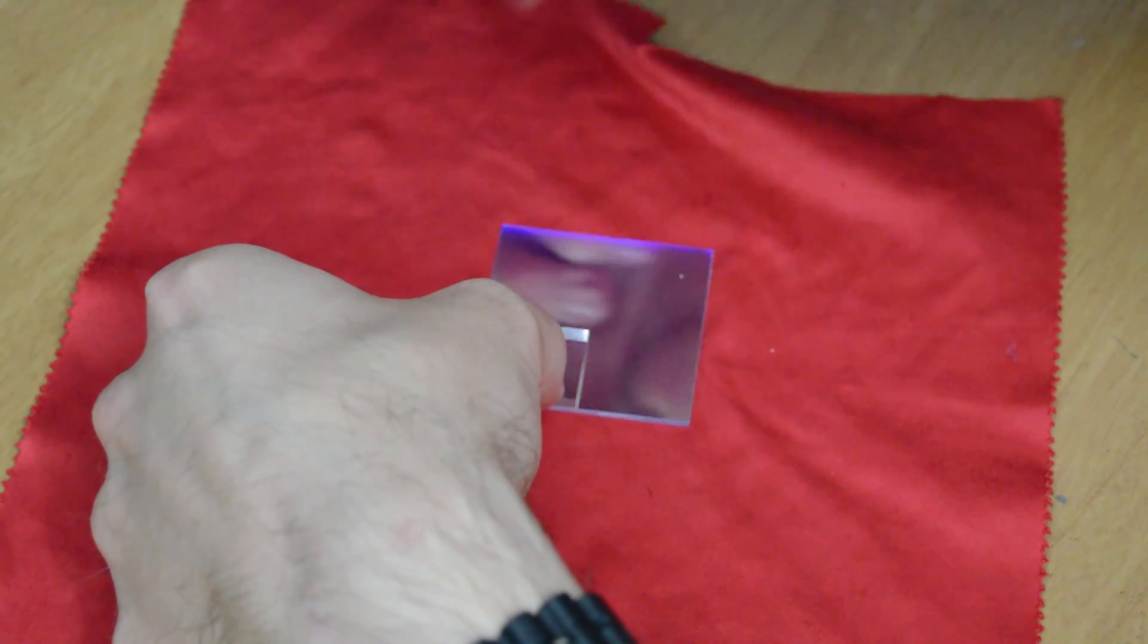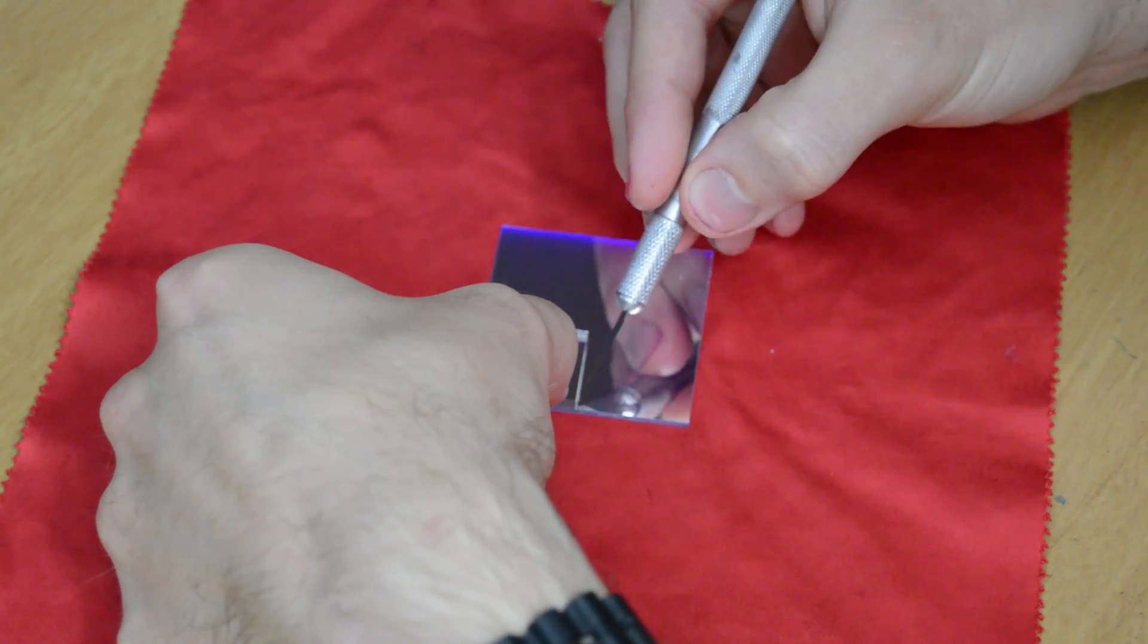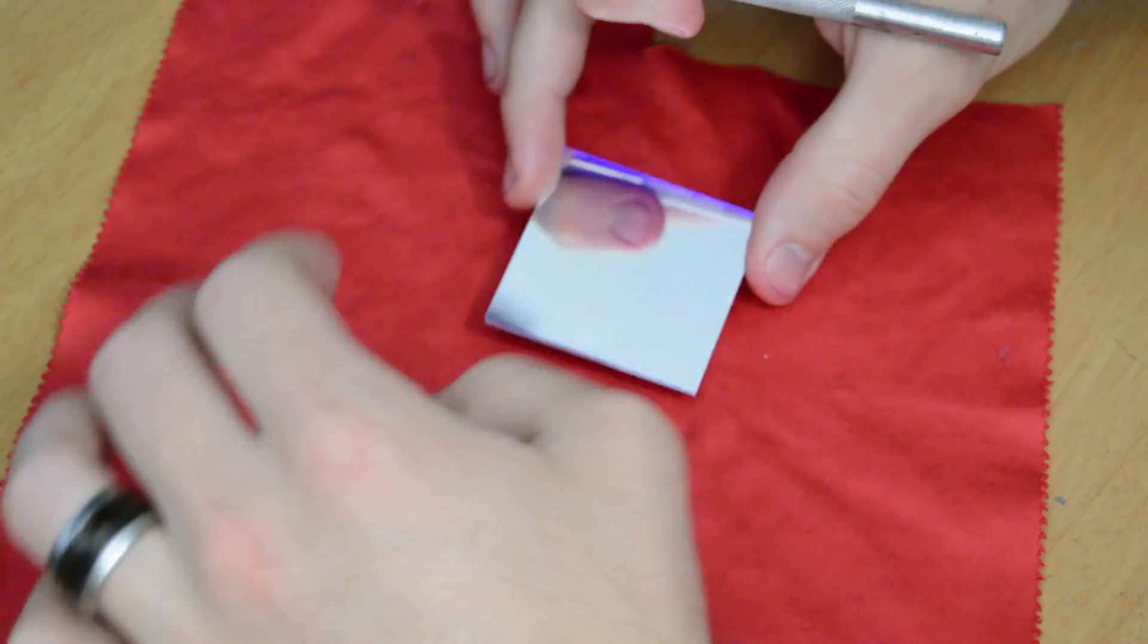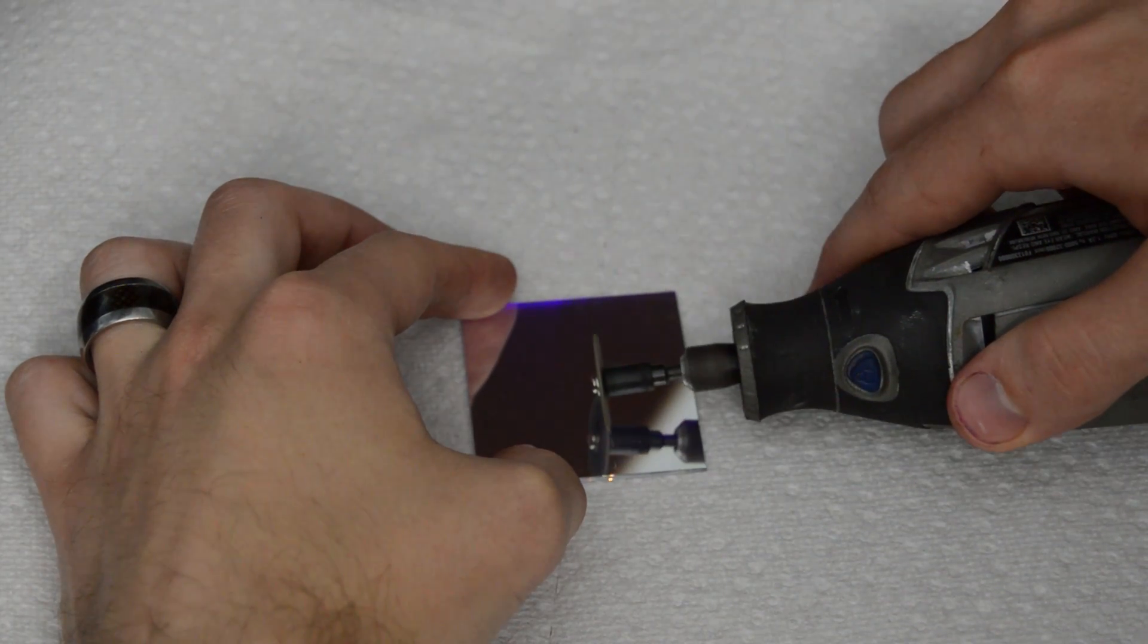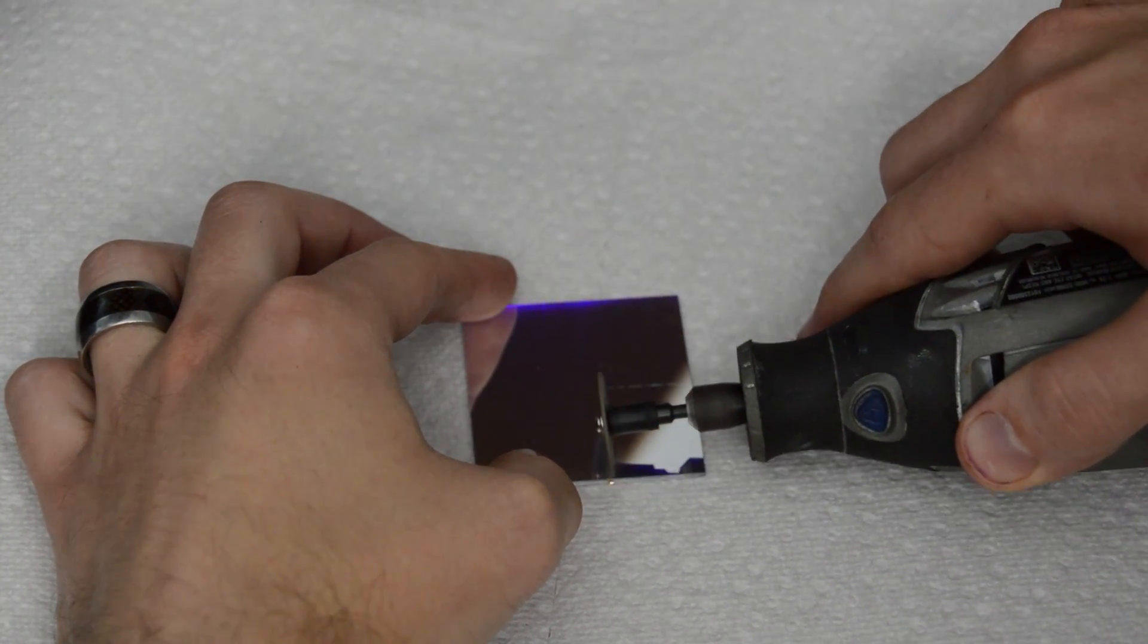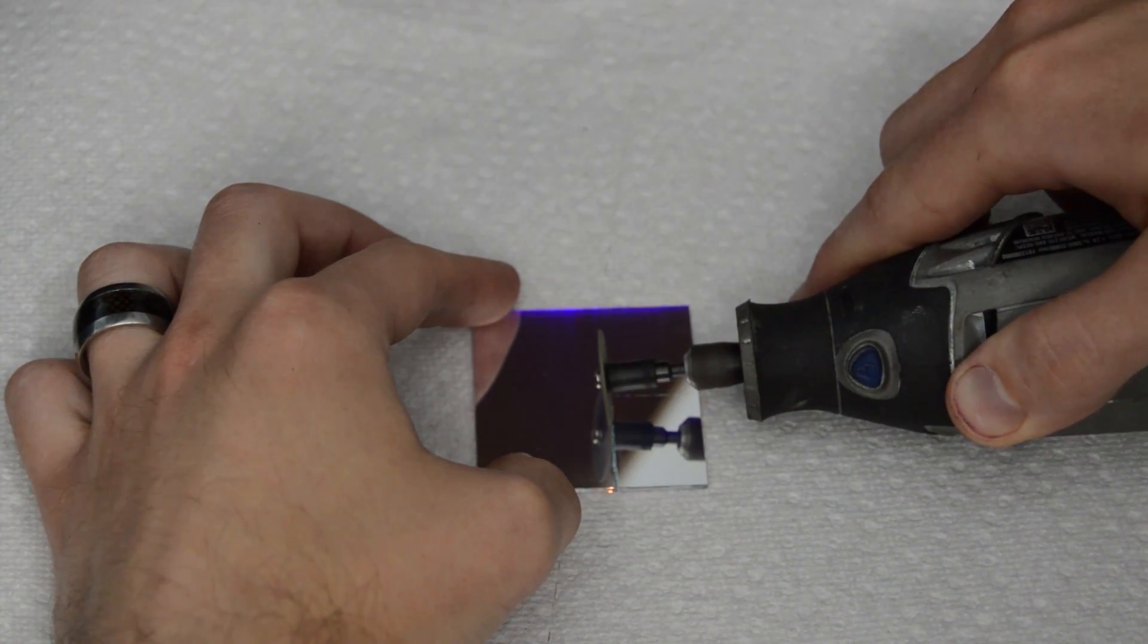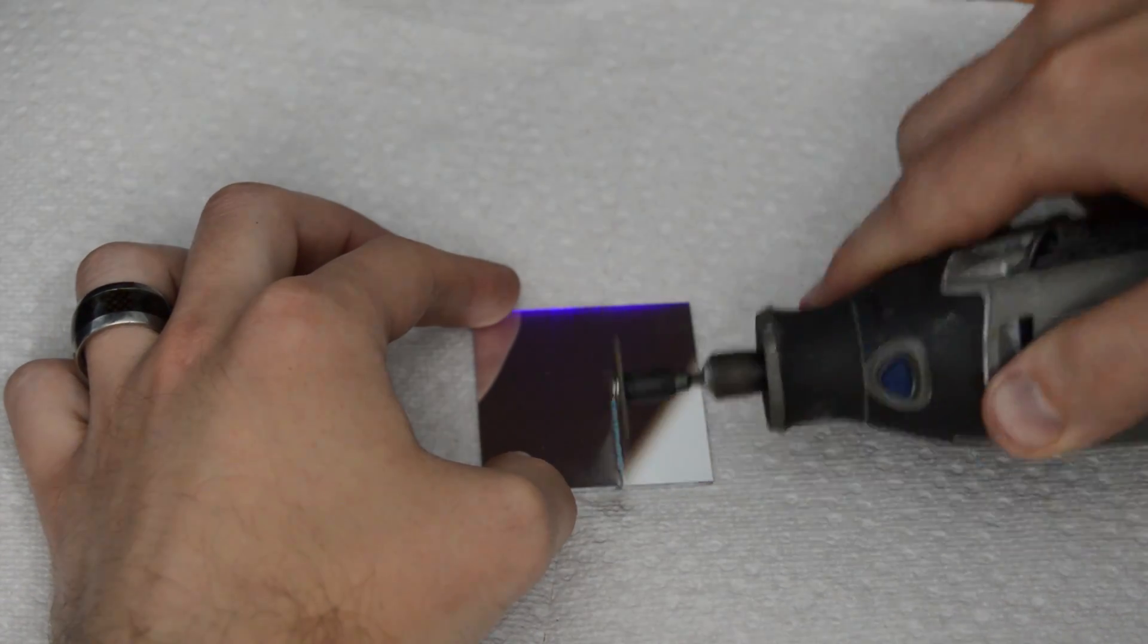We're going to take our infrared and UV blocking filter that was originally in the projector and use it as a template to cut out our new UV pass filter. Once our filter is marked up, I'm using a cutoff wheel on the Dremel to try and cut it out. However, if you have a glass cutter, that's really the most ideal way to do this since it is glass. As you'll see here, it's gonna split in half and that's because it's really not meant to be cut this way.